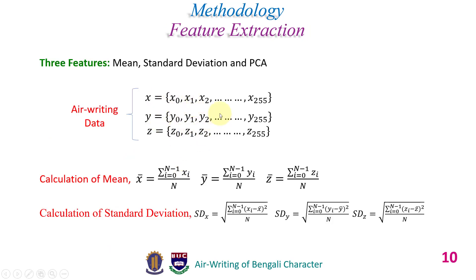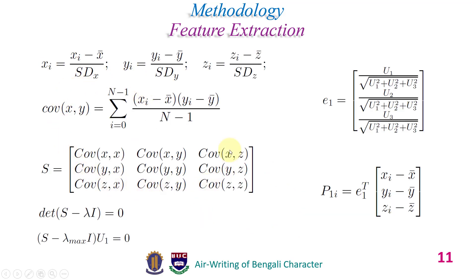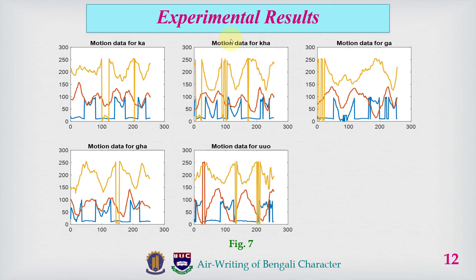This data represents acceleration in the X, Y, and Z directions. Next, we extracted features from this data. We used only three statistical features: mean, standard deviation, and PCA. These equations are used to calculate the mean and standard deviation of the X, Y, and Z data, and these equations are used to calculate the principal components of the X, Y, and Z data.